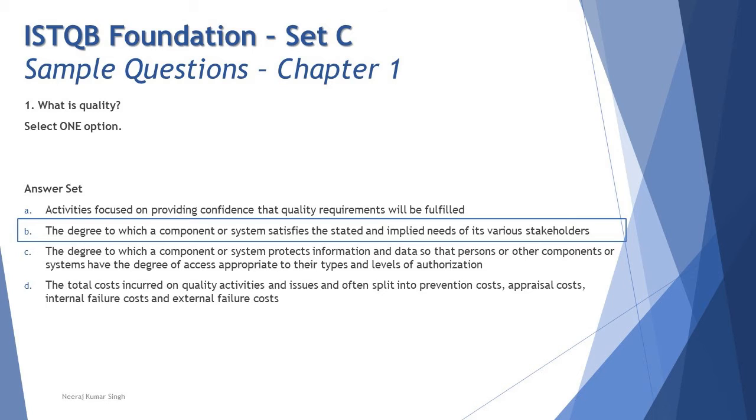Let's look at the next question which says: which of the following is a typical test objective? Select one option. Now test objective, you remember there were few major objectives. By now we have covered two different sets of papers, you should be pretty much straightforward and we'll be able to tackle what is the right answer. Here we have straightforward four options: preventing defects, repairing defects, comparing actual results with that of the expected, analyzing the causes of failure. Starting from the bottom: analyzing the causes of failure is root cause analysis, not done by testing, it's debugging. Comparing actual results to expected result is test execution and certainly not a typical test objective. Repairing defects is a developer job, not testing at all.